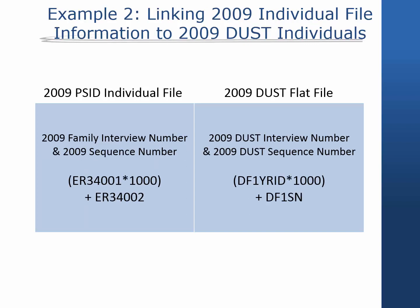If you wanted to link all individuals from the Disability and Use of Time supplement in 2009 with the 2009 individual file, you would use the 2009 family interview number in combination with the 2009 sequence number — variables ER34001 and ER34002 from the 2009 individual file — and variables DF1YRID and DF1SN from the 2009 DUST flat file. For the 2013 supplement, you would similarly use the 2013 family interview number and sequence number from the 2013 individual file, and the family interview number and sequence number from the 2013 DUST flat file.